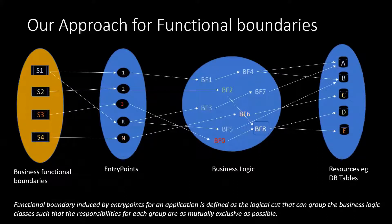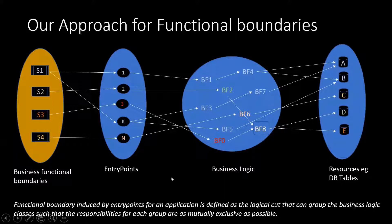We now pictorially present the problem of finding functional boundaries that we are trying to solve using functional cues and code structure properties. The blue circles and ovals represent the source code properties inferred using various static analysis techniques. The main abstractions arrived at using our analysis are grouped into three parts: entry points, business logic, and resources. Entry points work as functional cues because the monolith application must have exposed its entry points based on the functionality it wanted to provide. The business logic is the core area of the application which consists of domain entities, various business rules, and so on.